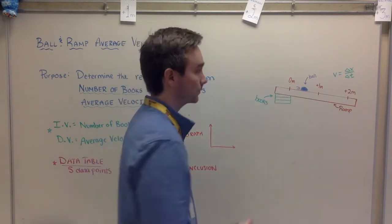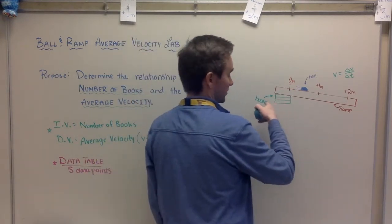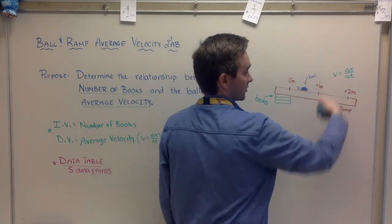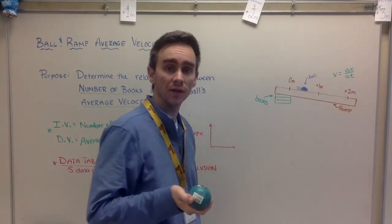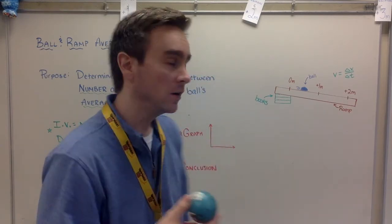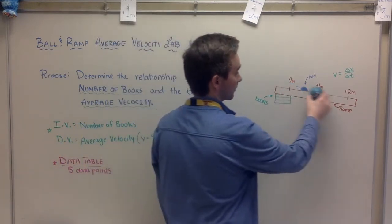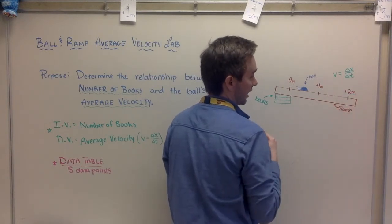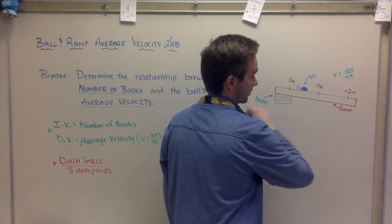What's the relationship between the number of books and the average velocity? Now I don't have a tool that measures average velocity, but you know how to calculate average velocity. So all we got to do is roll down the ball, see how much time it takes to go, say, one meter or say two meters.